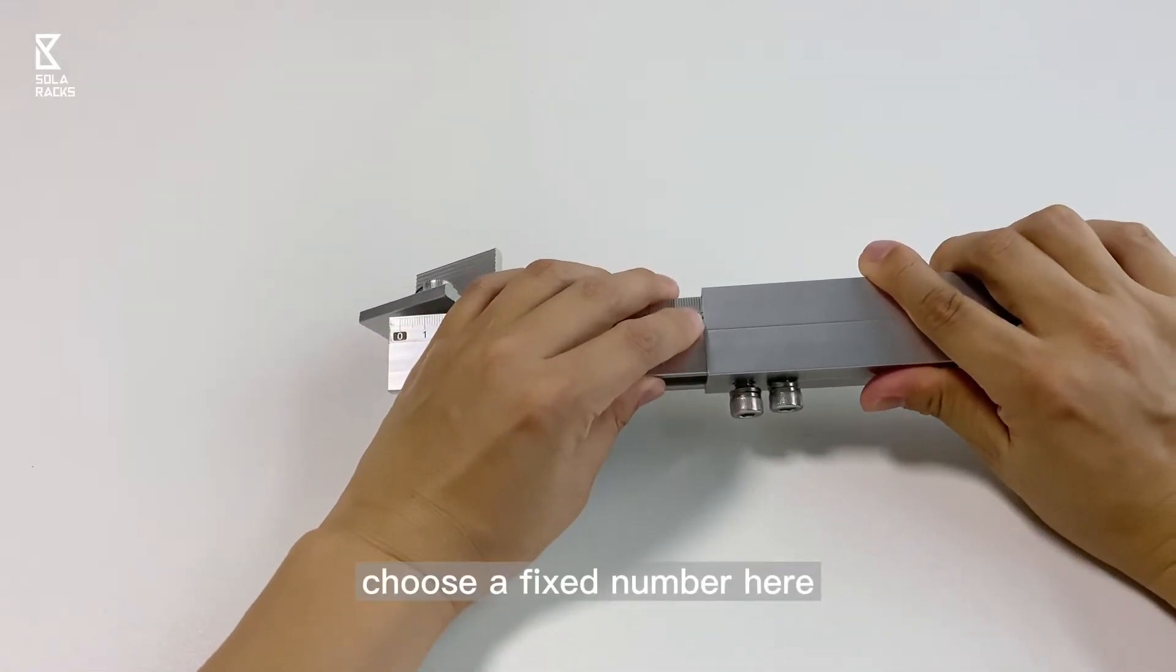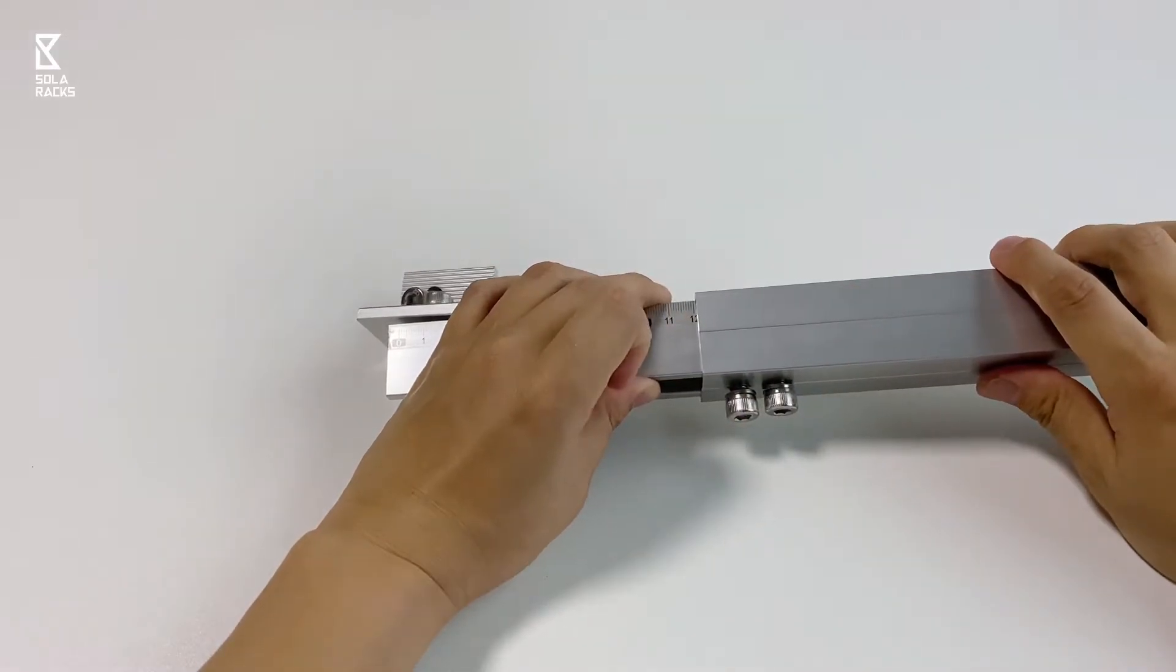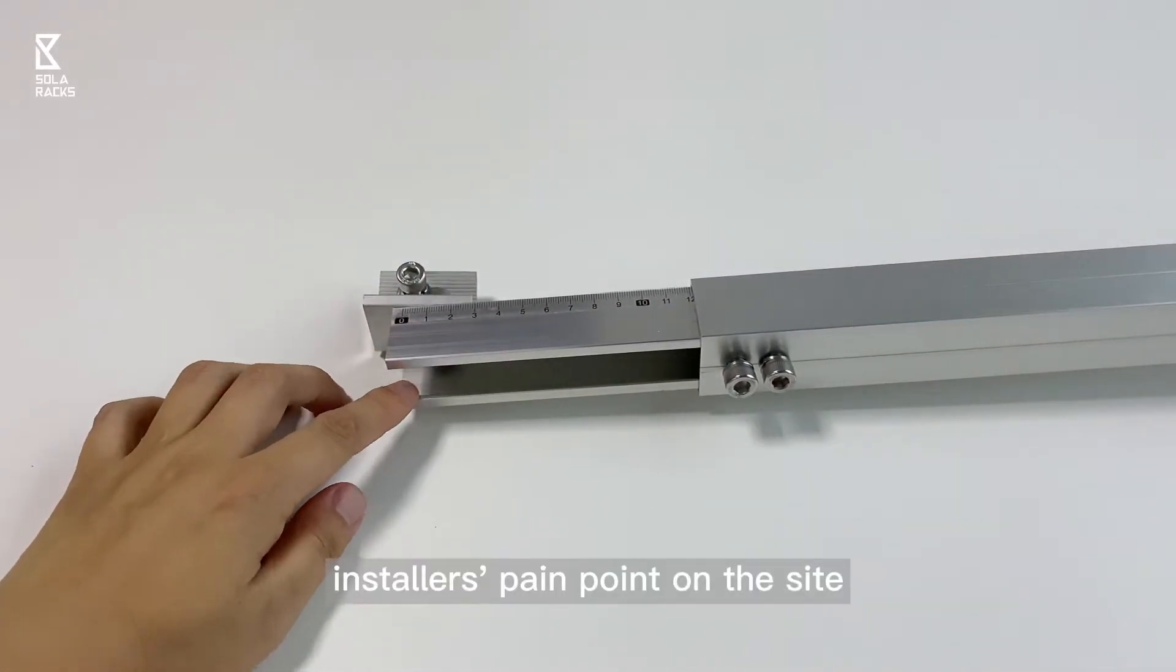Choose a fixed number here, tighten the bolt for the first leg, then all the rest the same. This really solves our installer's pain point on the site.